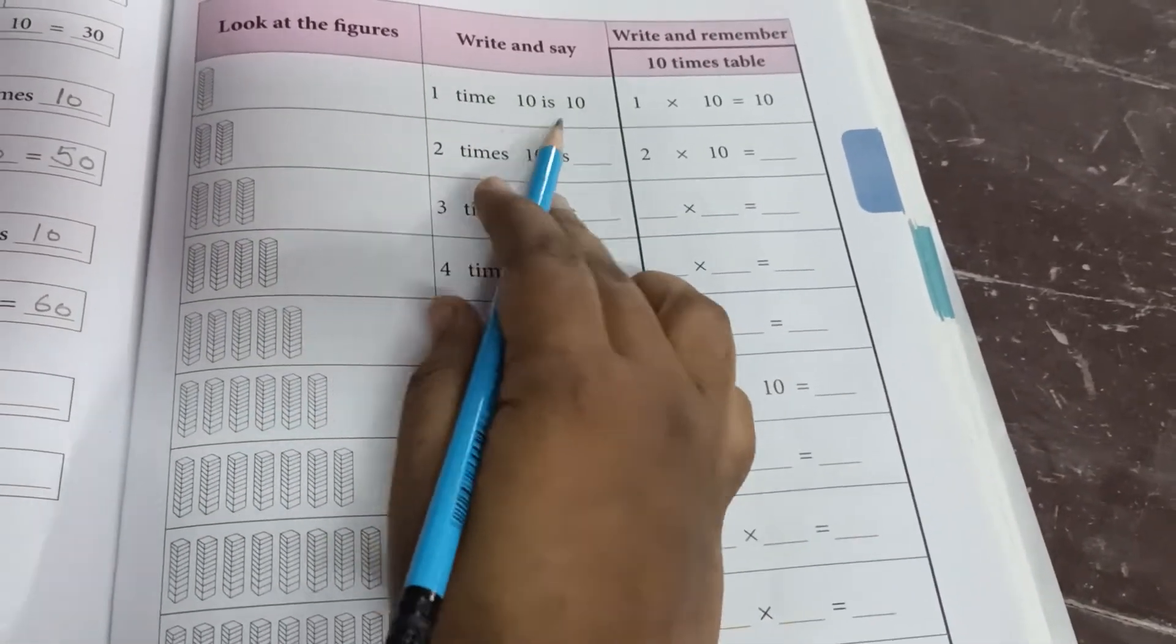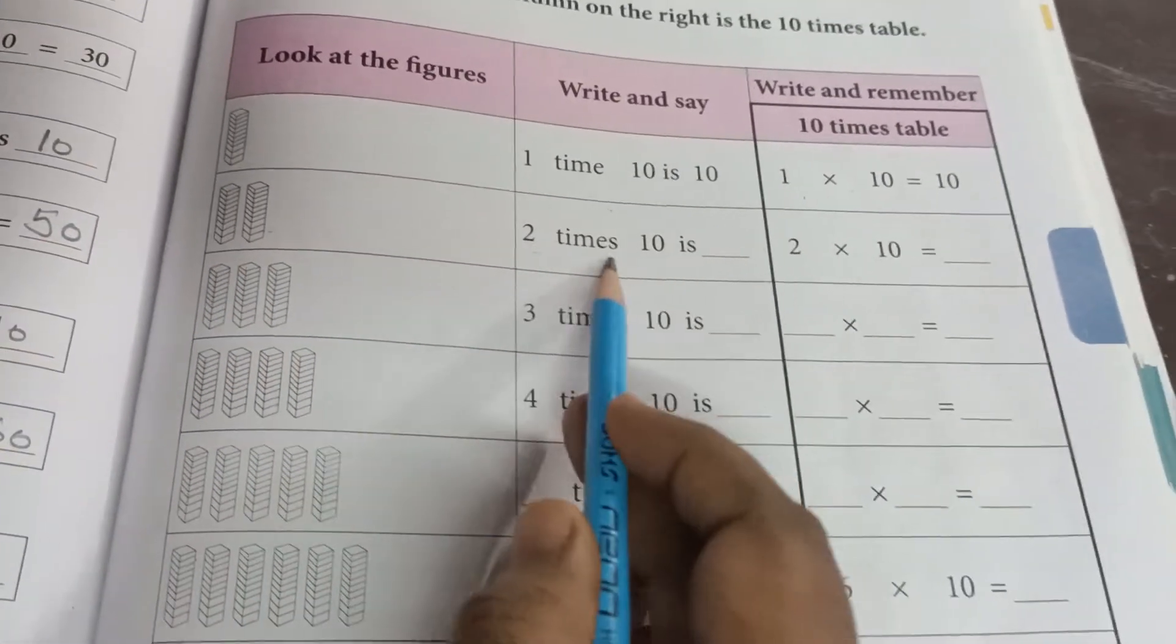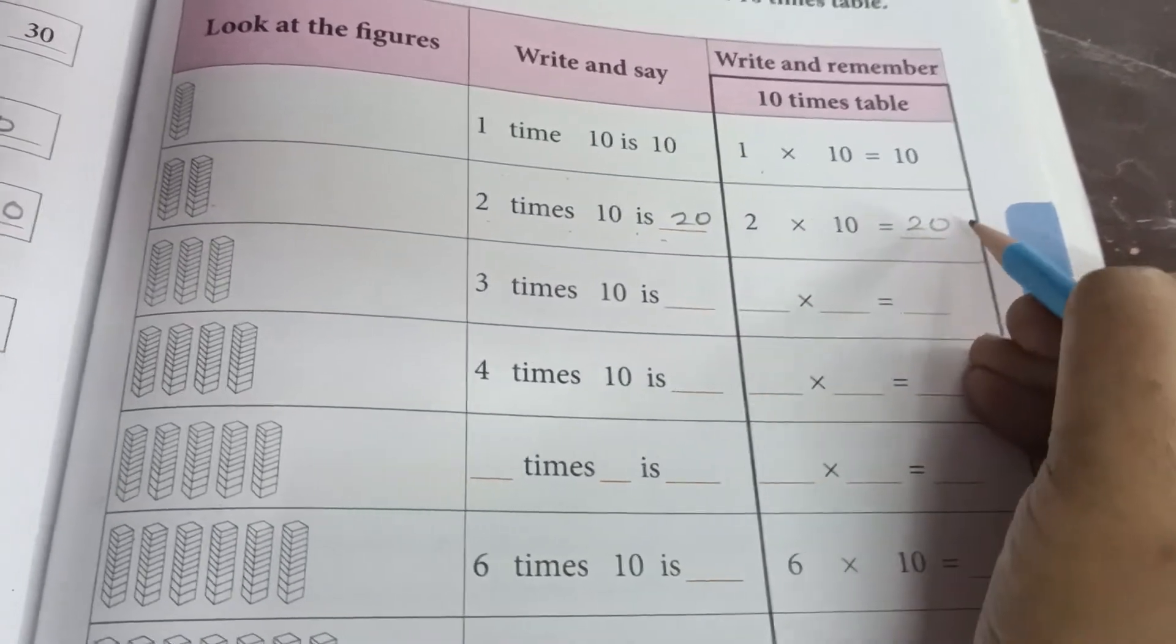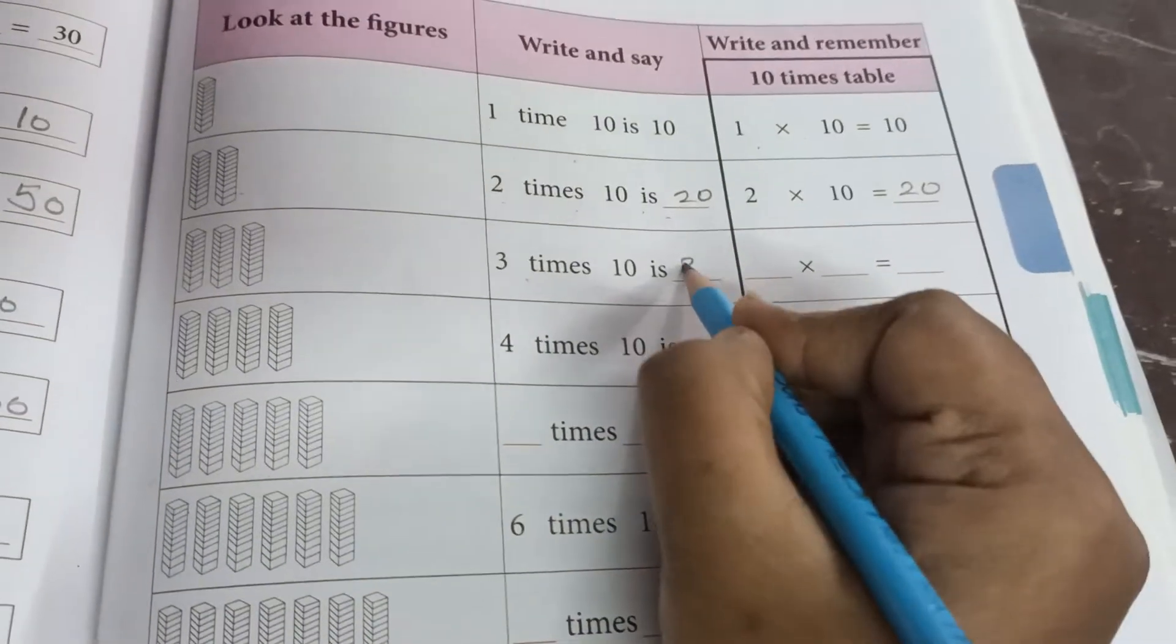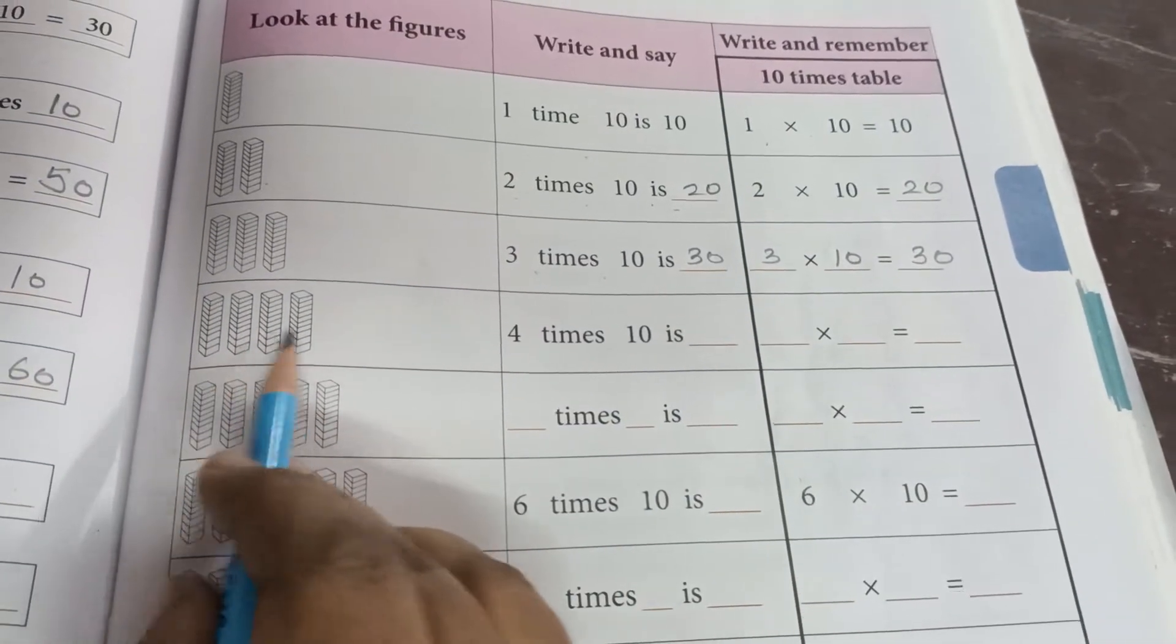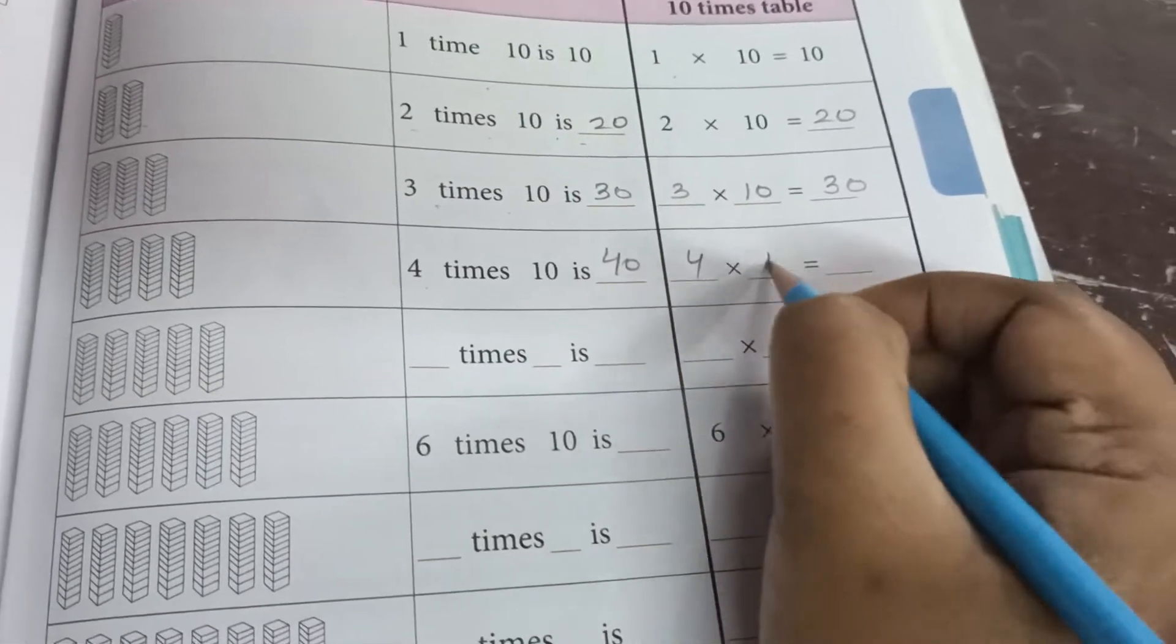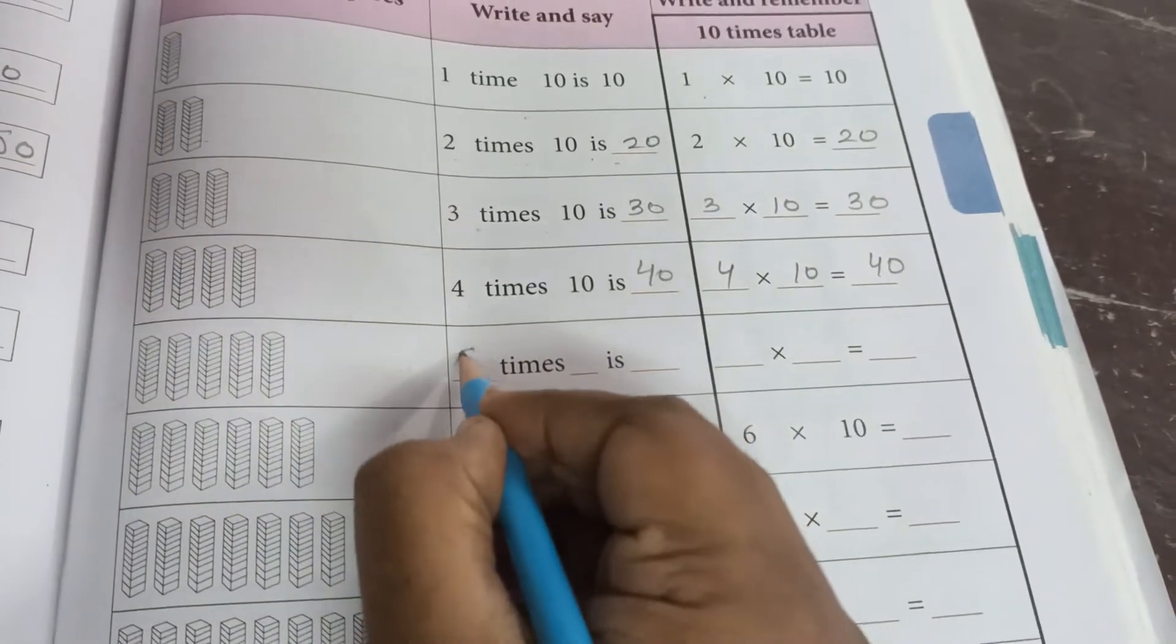So 1 times 10 is 10. Means 1 multiplied by 10 is 10. Now same way, next is 2 times. 2 times 10 is 20. So 2 multiplied by 10, our answer will be 20. Same way, 3 times. So 3 times 10 is 30. So 3 multiplied by 10, our answer will be 30. Now here are 4 times 10. So 4 times 10, the answer will be 40. 4 multiplied by 10, our answer will be 40.